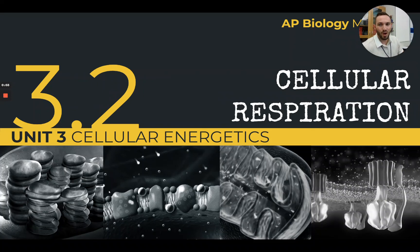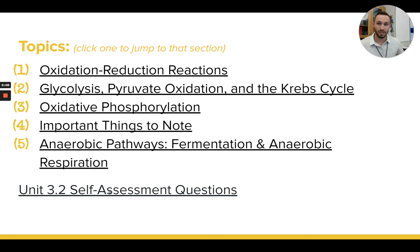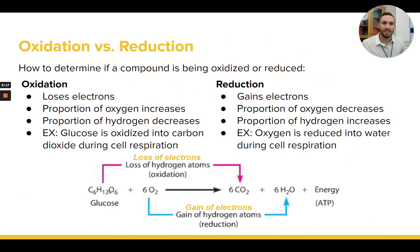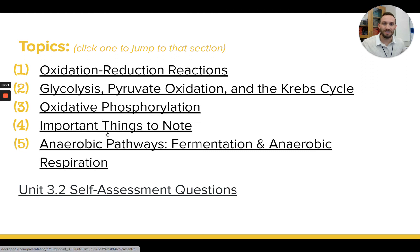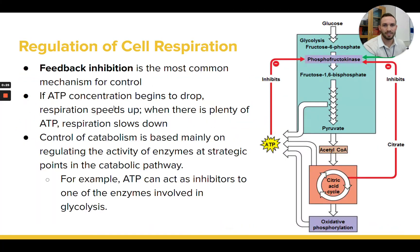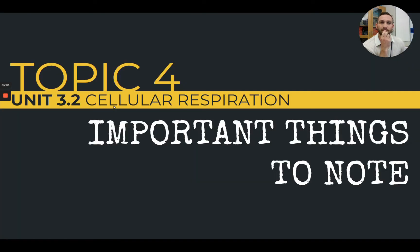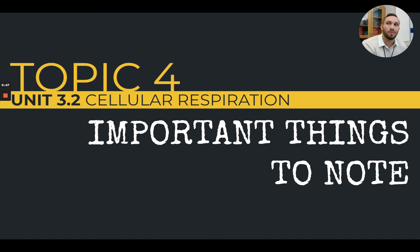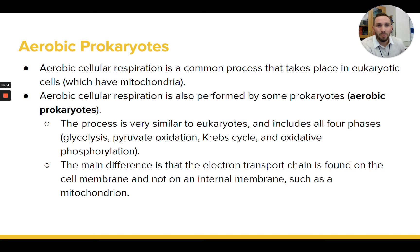Hello students, we're going to move on to topic four of these 3.2 notes. Topic four is a pretty short but important topic. We've now talked about what cell respiration is, how it works, the different parts, and all the complicated details involved in turning glucose in the presence of oxygen into CO2 and water, releasing energy that can be used to make ATP molecules for the cell.